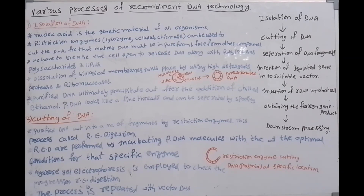Today we are discussing the various processes of recombinant DNA technology. This is the most important question in secondary biology. In this lesson, the process of recombinant DNA is the first question, and the second is: what tools are used in recombinant DNA?